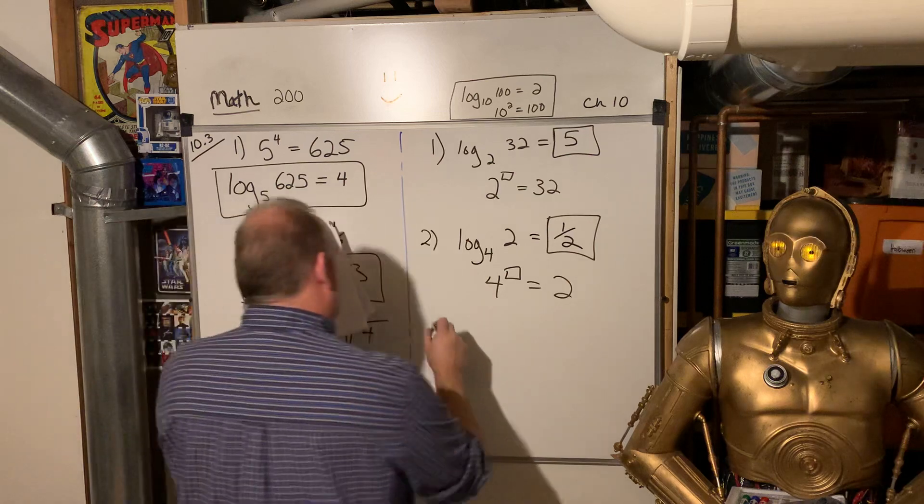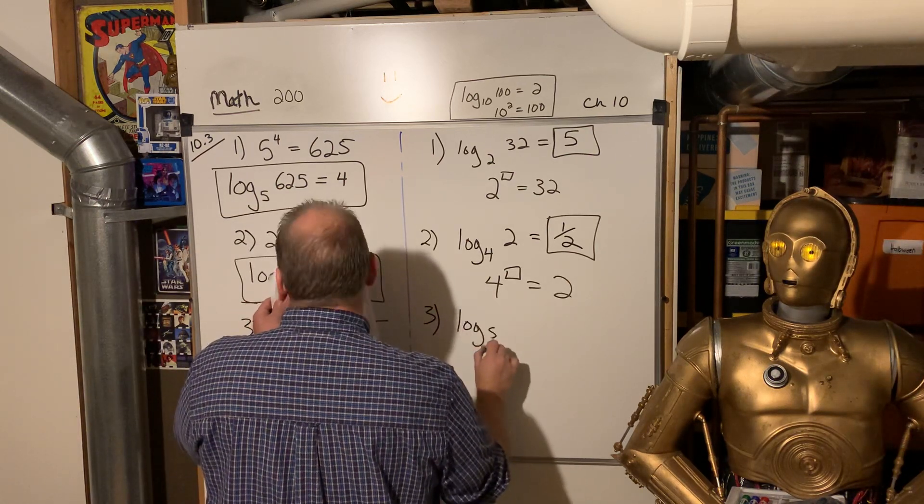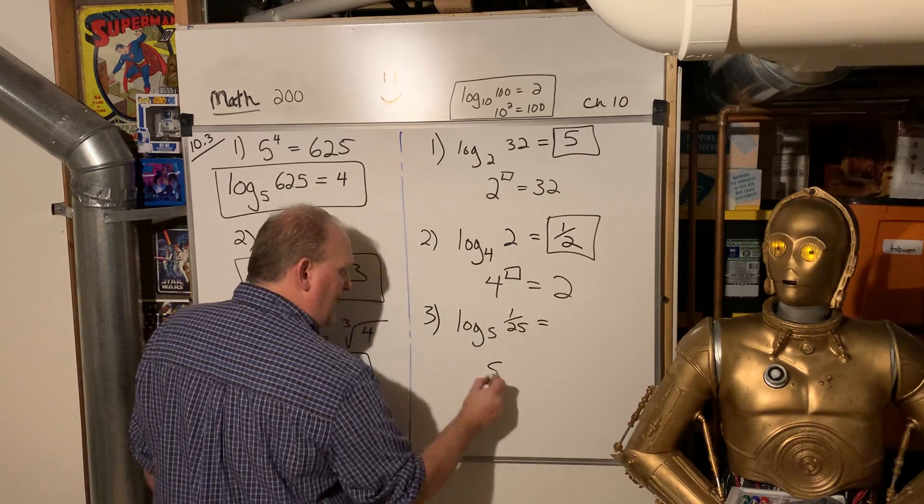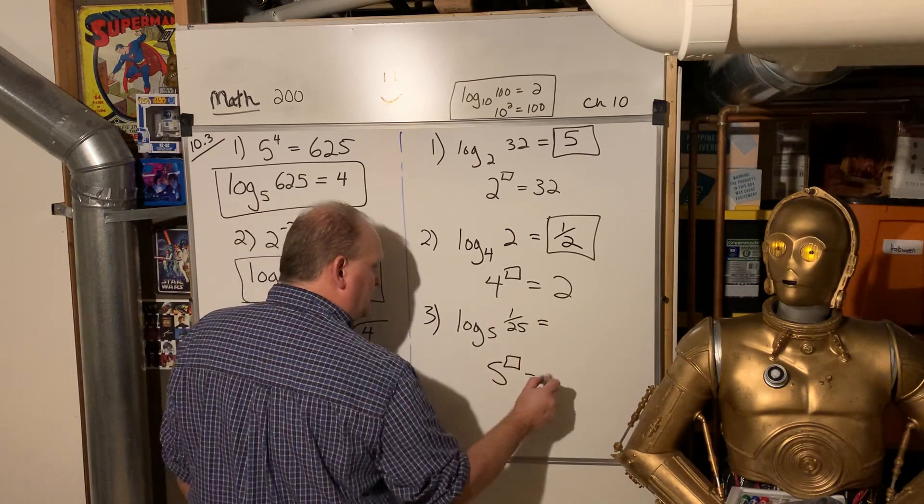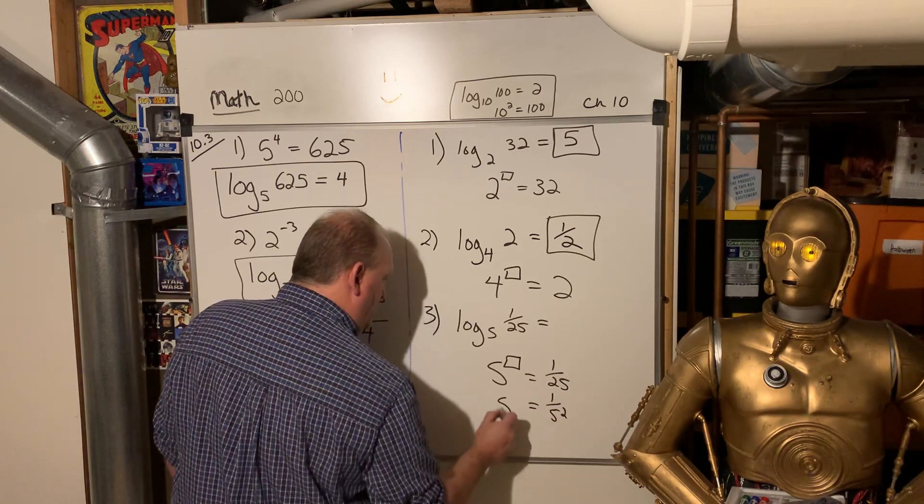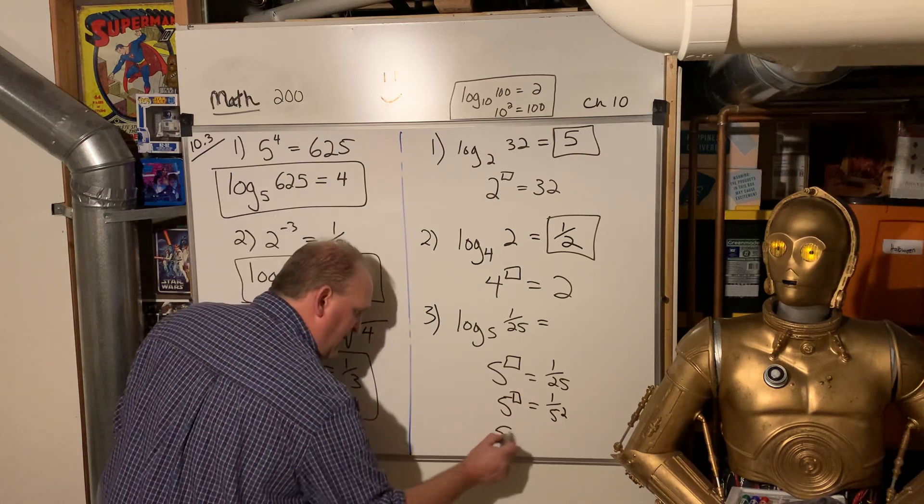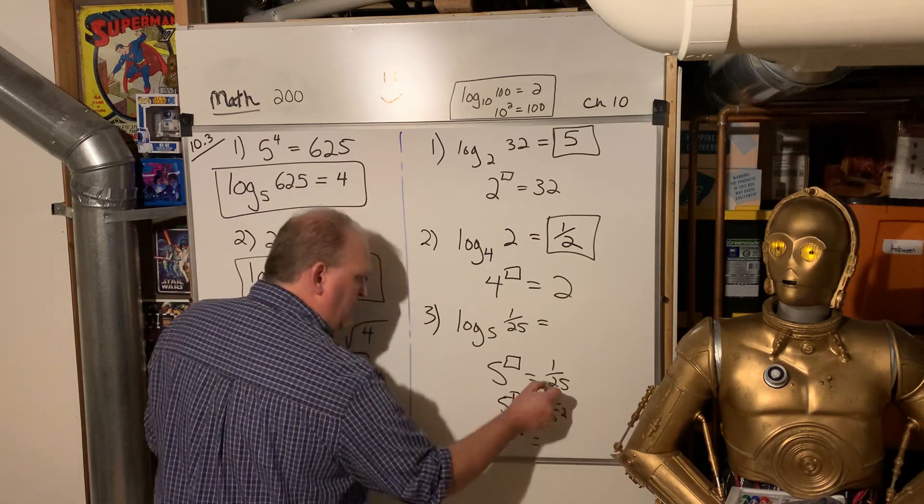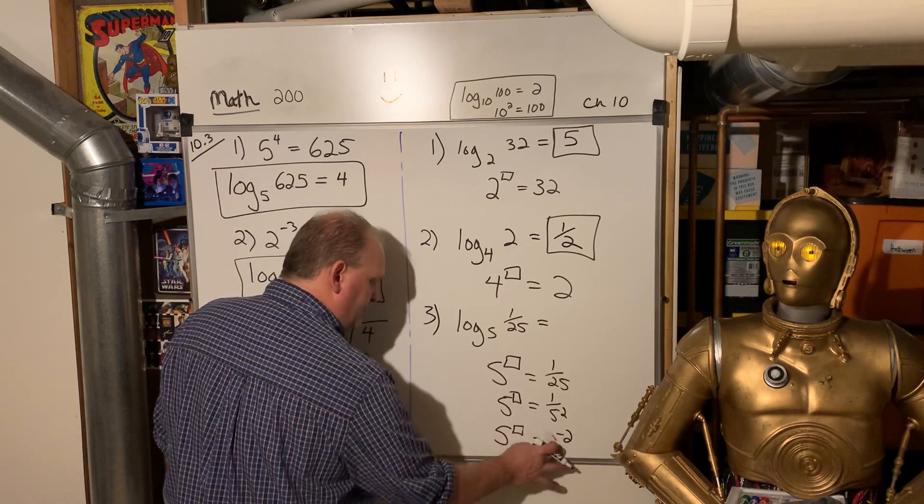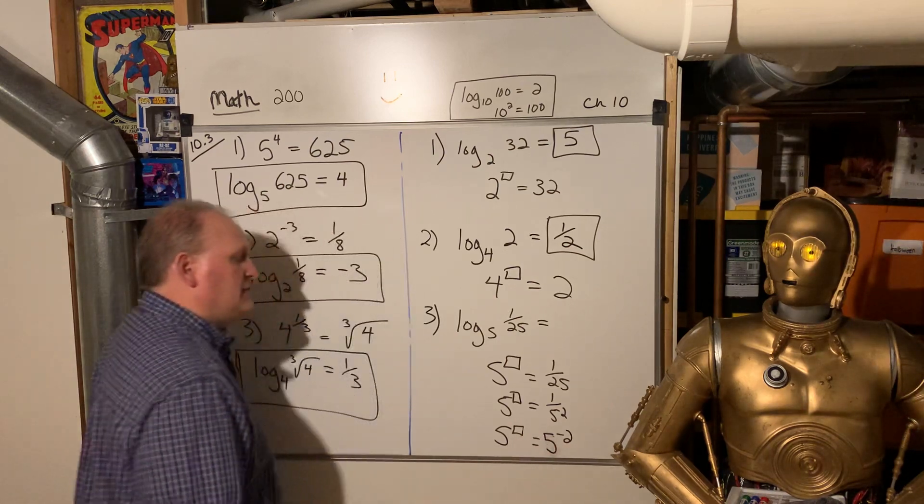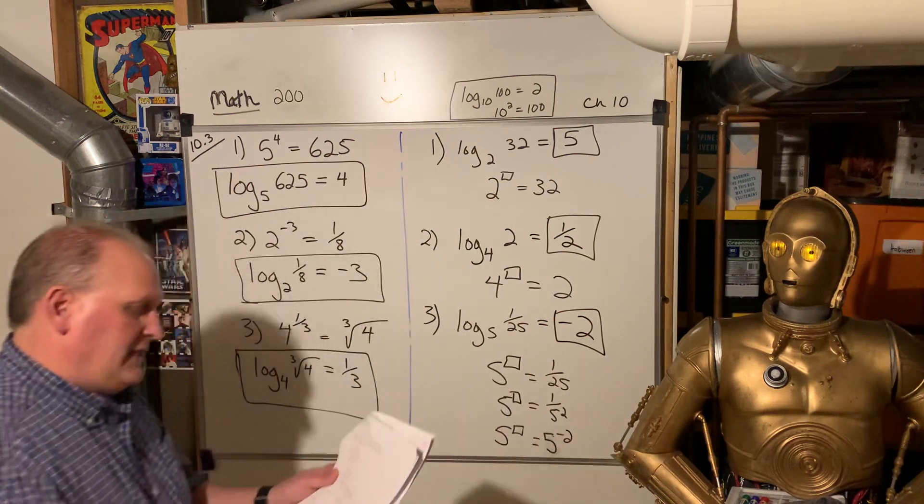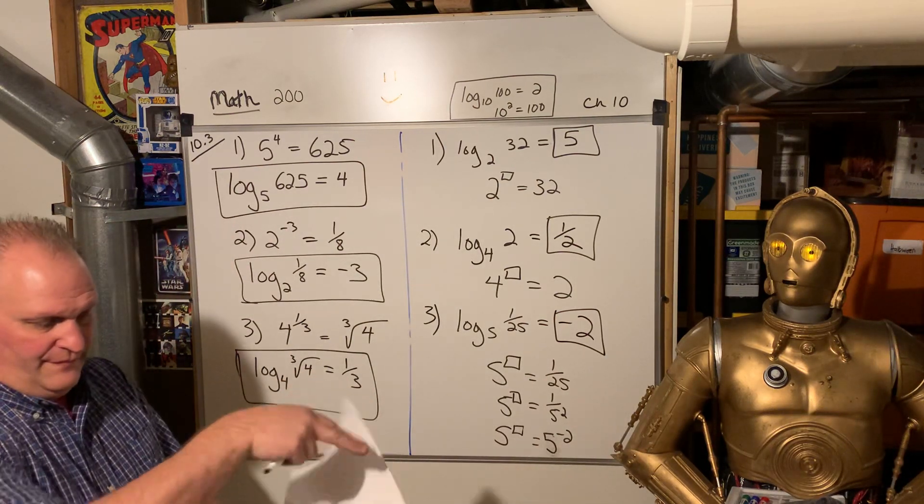Well, let's look at three. Log base five of one 25th. That one's a little tricky, right? So five to what power gives you one 25th? So that's one over five squared. And remember, we want the bases to be the same. So five to what power? You'd move that up and make it negative. So five to the negative two. Oh, that's a really ugly five. So it's negative two. That was a little tricky. Okay.